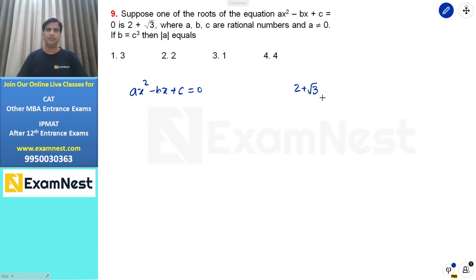Now, if one root is 2 + √3, then the other will be 2 - √3. Conjugate roots always come in pairs. This is a basic concept in quadratic questions.